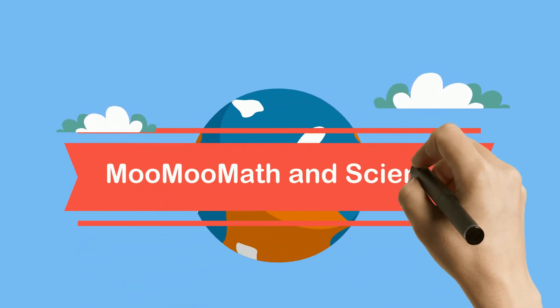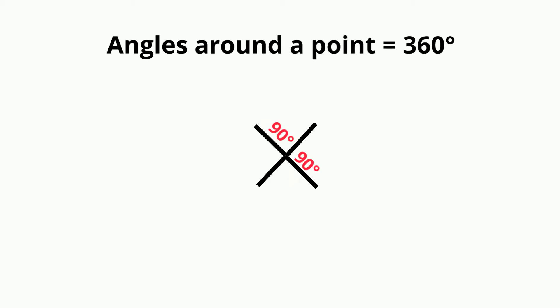Welcome to Moomoo Math & Science and angles around a point. The angles around a point equal 360 degrees. Let's take a look at a couple examples.